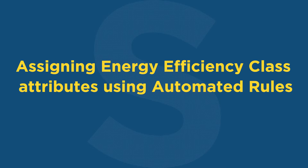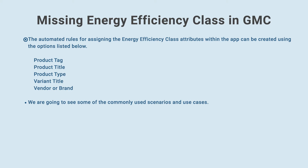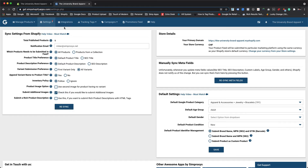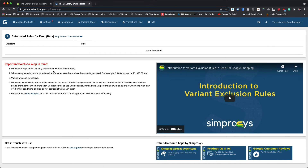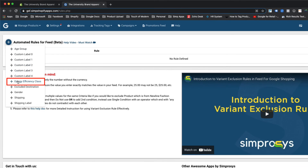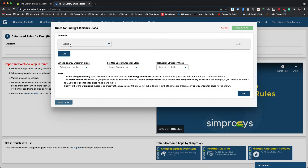Now let's proceed with assigning energy efficiency class attributes using automated rules. The automated rules for assigning the energy efficiency class attributes within the app can be created using the options listed below. We are going to see some of the commonly used scenarios and use cases. From the app's interface, please hover over to the settings menu and select automated rules for feed. Now click on the plus icon and select energy efficiency class. The dialog window will appear where we proceed ahead by selecting the product title from the first dropdown menu.